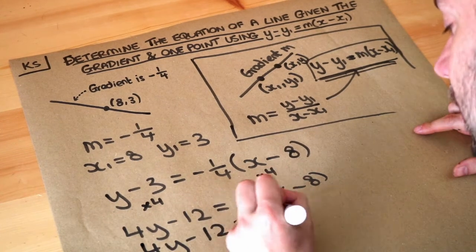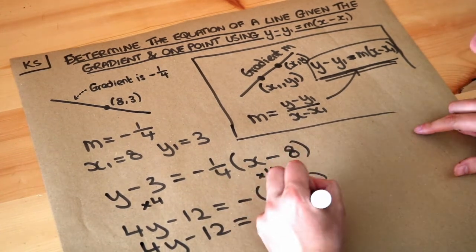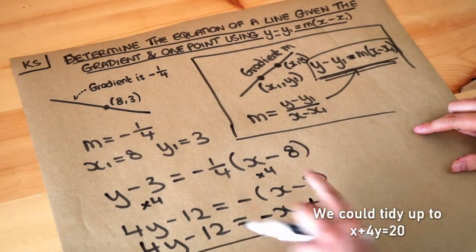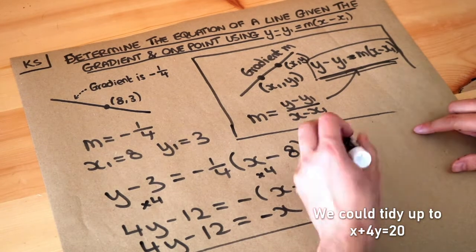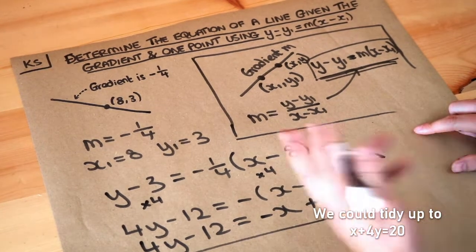So we've got minus x and we've got minus minus 8, which is plus 8, and that would be the final solution without using any fractions. If they don't ask for your equation in a particular form, then just leave it like that because that is the right answer.